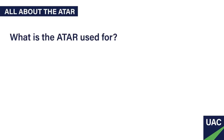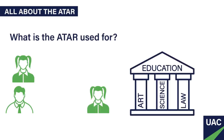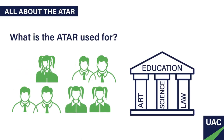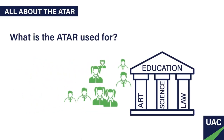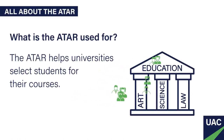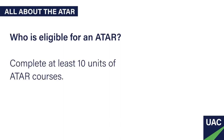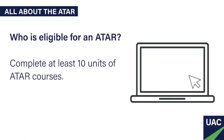What is the ATAR used for? The ATAR has only one purpose: to help universities select students for their courses. Most universities also use other selection criteria. For example, if you want to study a design course, you'll probably need to submit a portfolio. Who is eligible for an ATAR? To get an ATAR, you must complete at least 10 units of ATAR courses. A full list of these courses is available on the UAC website.